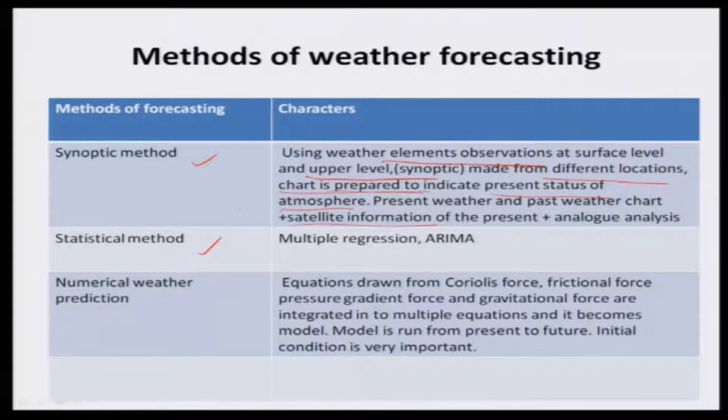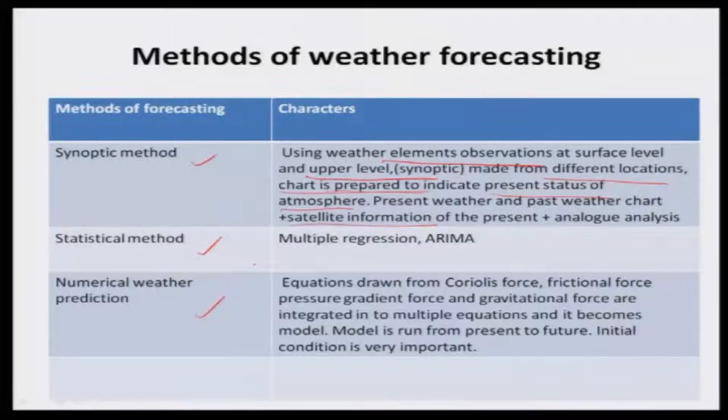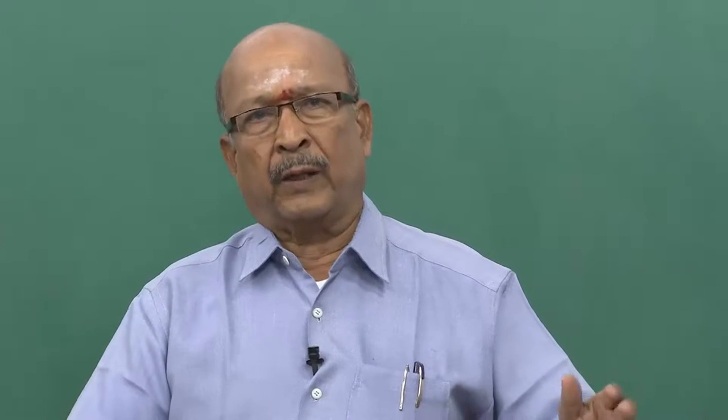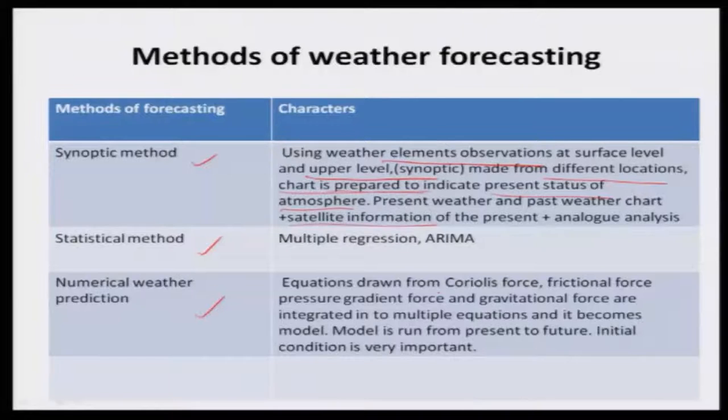The second method is the statistical method. Multiple regression, ARIMA model — arithmetic regression integrated moving average — is used especially for developing long range weather forecasts. The third is the advanced method: numerical weather prediction. The atmosphere is divided into many profiles, and in each profile you measure temperature, humidity, wind speed, atmospheric vapor pressure, and everything. You put these under a matrix of different layers and produce equations drawn from Coriolis force, frictional force, pressure gradient force, and gravitational force, integrated into a multiple equation that becomes a model.